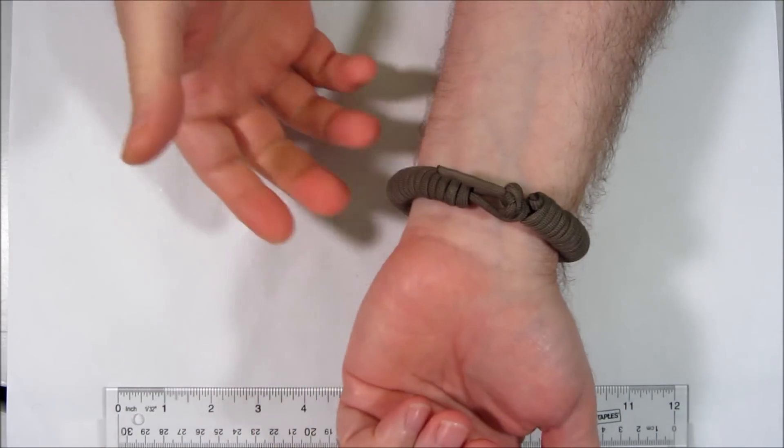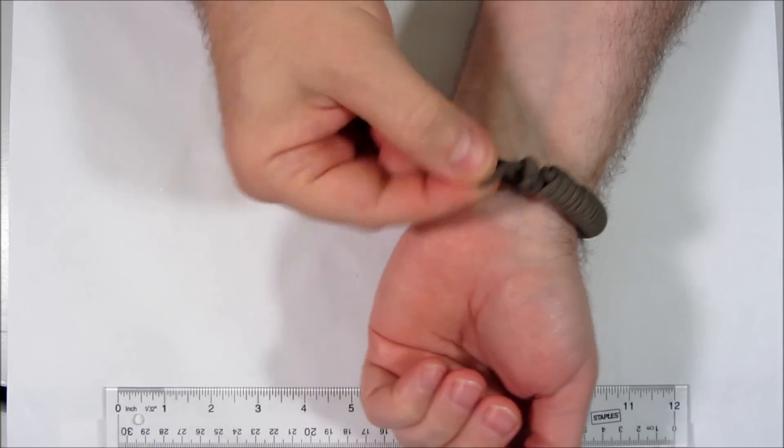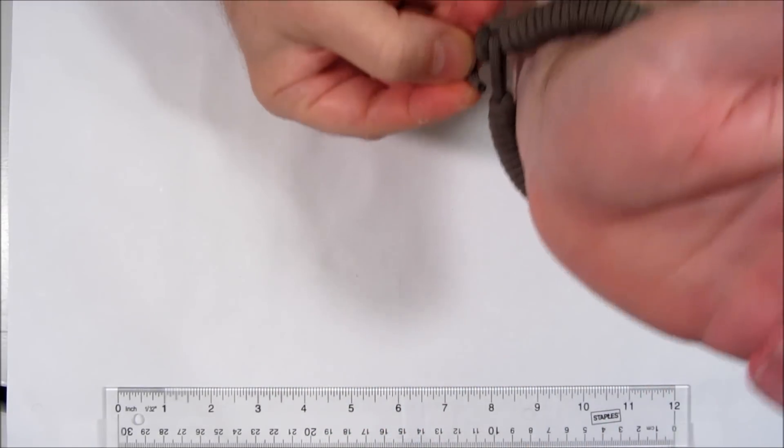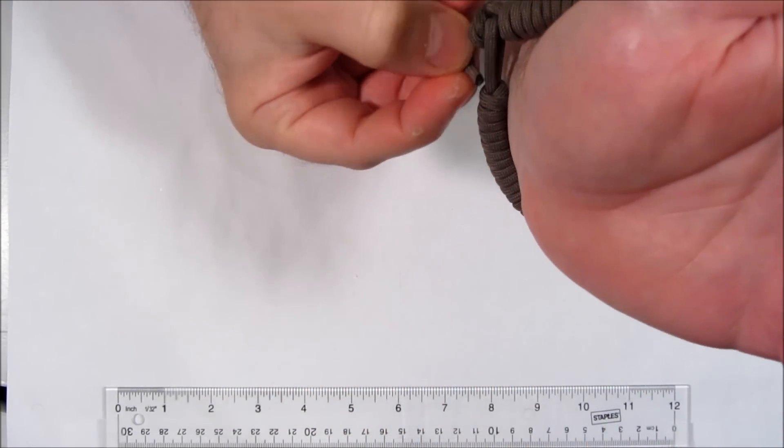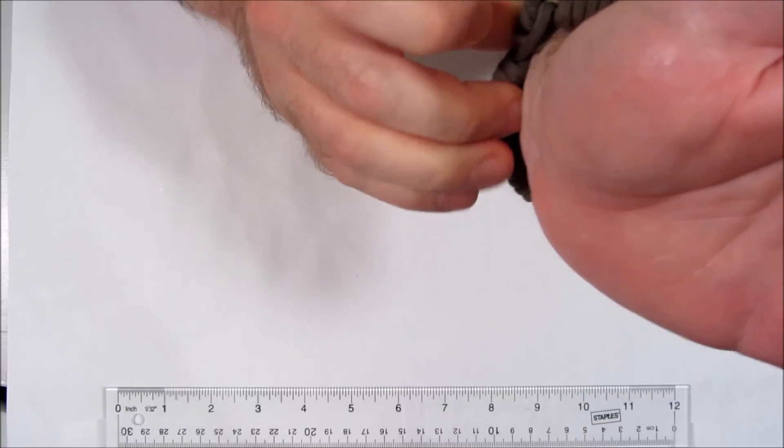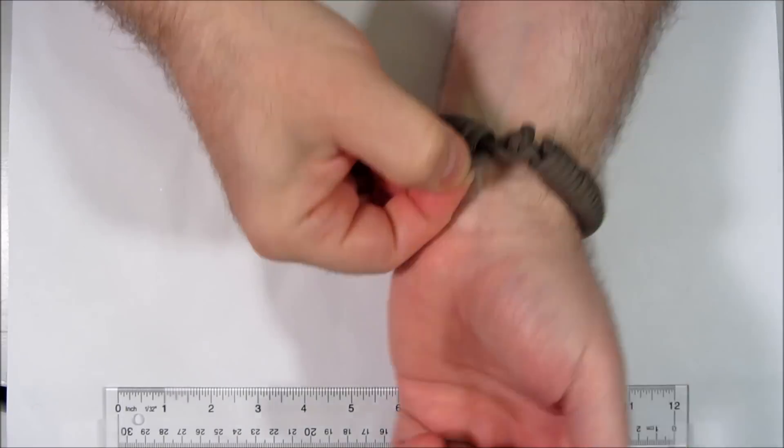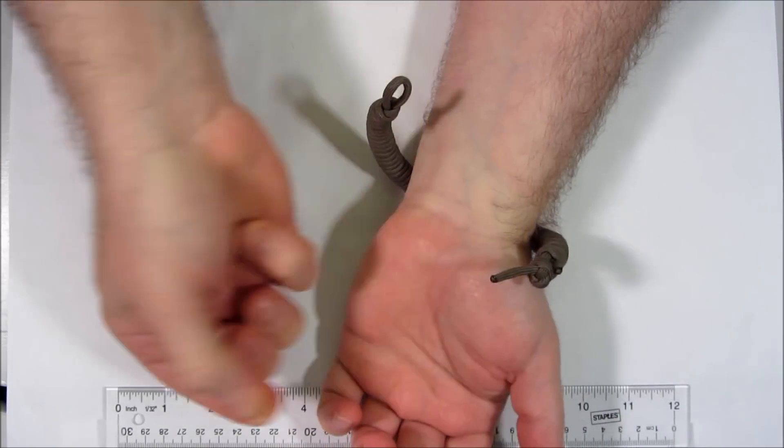So there we have the end result. Removal is very quick, also thanks to this. You stick that into the loop, and then when you pull this from the other side, it acts as a quick release. Voila!